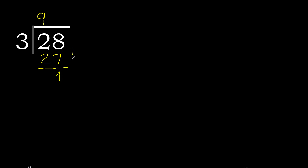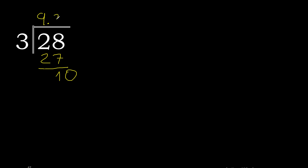There is no number that goes down, therefore complete — always complete with 0 — and here with point 3, 10. 3 multiplied by 4 is 12, excessive. 3 multiplied by 3 is 9. 10 minus 9 is 1. Always complete with 0.